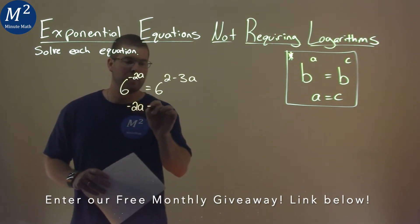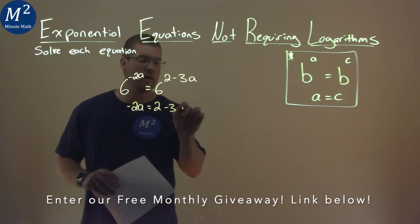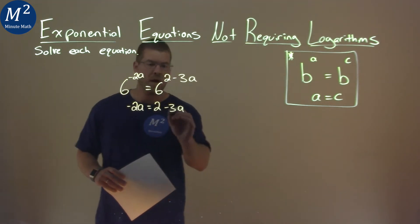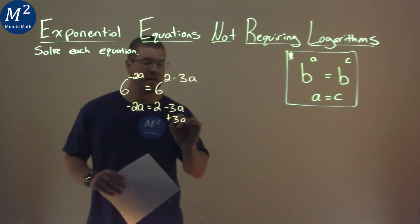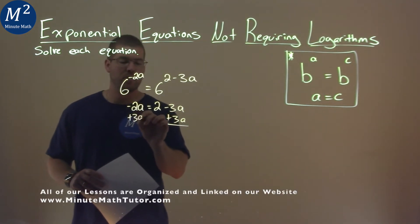So negative 2a now is equal to 2 minus 3a and we're solving for a. I'm going to add 3a to both sides and this is actually over fairly quickly.